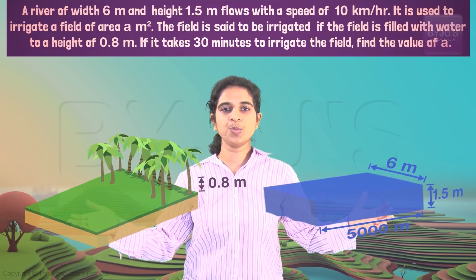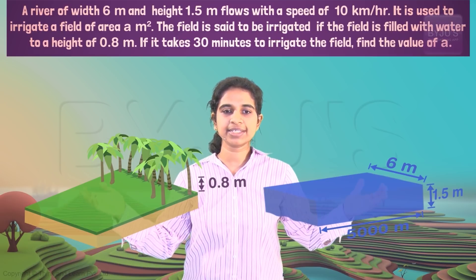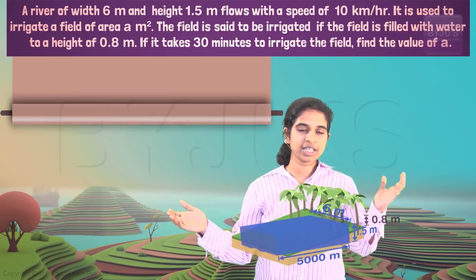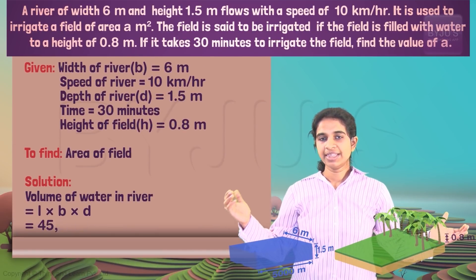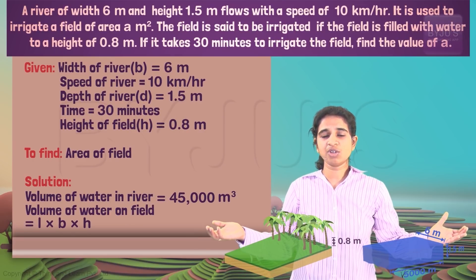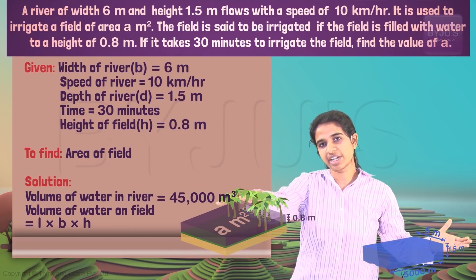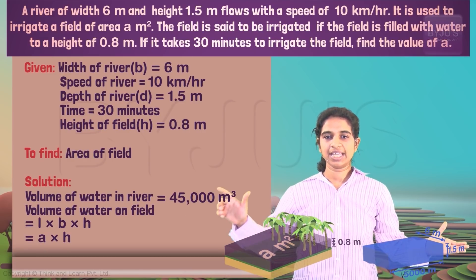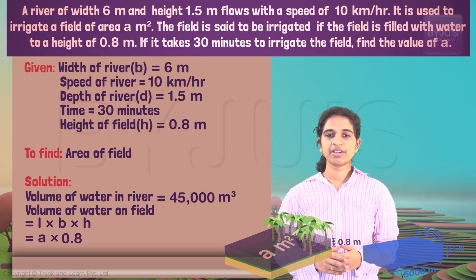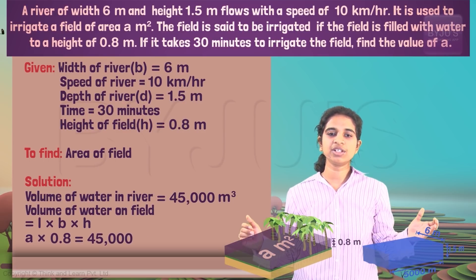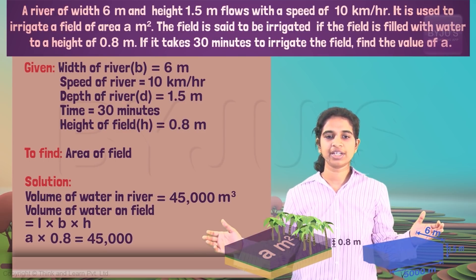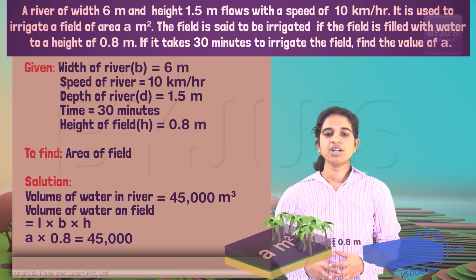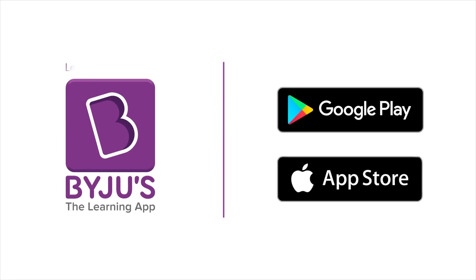What must be equal for the river and the field? The volume — because the amount of water is the same in both cases. Volume of river = length × breadth × height. Volume of field water = area × height. Equating the two: length × breadth × height = area × height, which gives an area of 56,250 square meters.